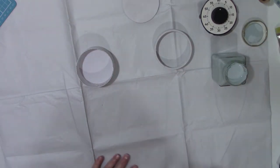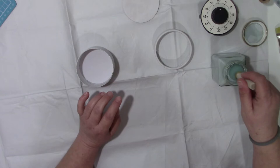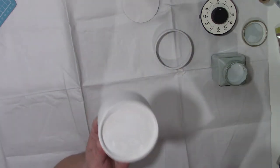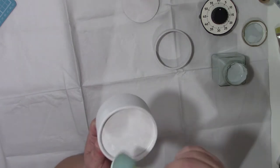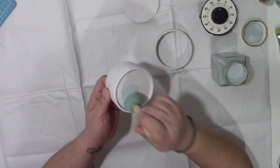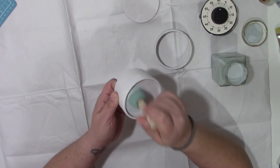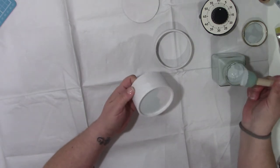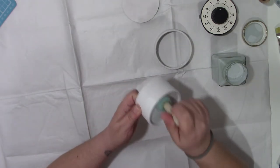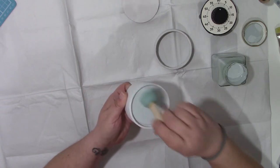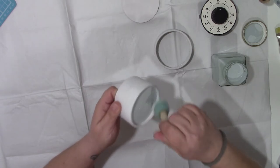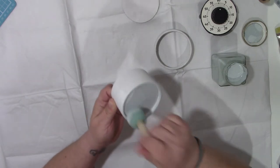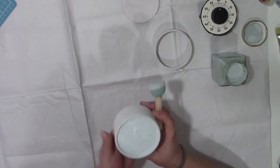I'm doing it in this turquoise blue. I'm gonna use a dabber like this and just dab it on because I'll get away with putting one or two coats on using this dabber, whereas if I use a brush it might need three or four coats.